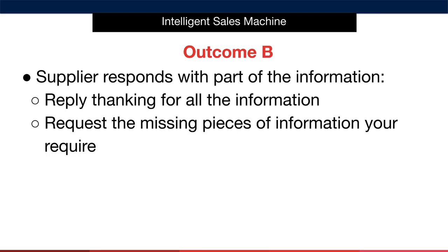The next scenario is that your supplier responds with part of the information that you asked for. In this case, begin by replying and thanking them for sending the information. In that same email, request the missing pieces of information you require and let them know that you need this information to accurately assess the product in your market. You can let them know that you're in a position to place an order quickly should the economics behind the product work well for you. This will show the supplier that you're serious about placing an order and will help them understand the importance of the information you haven't received yet.